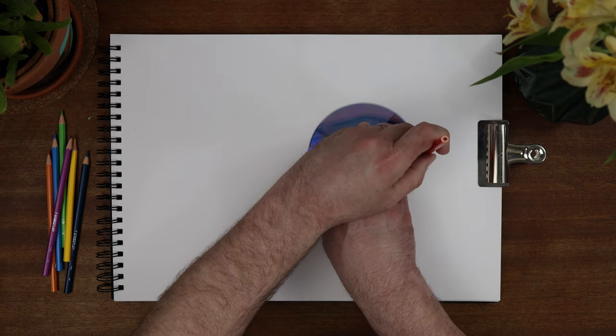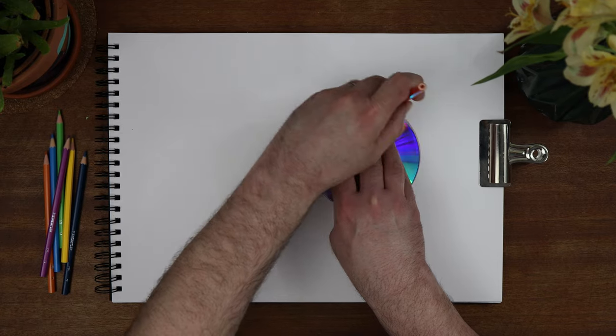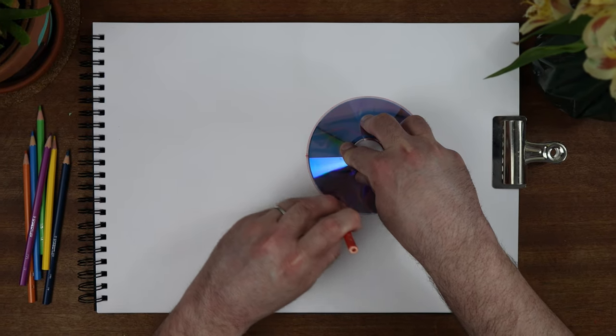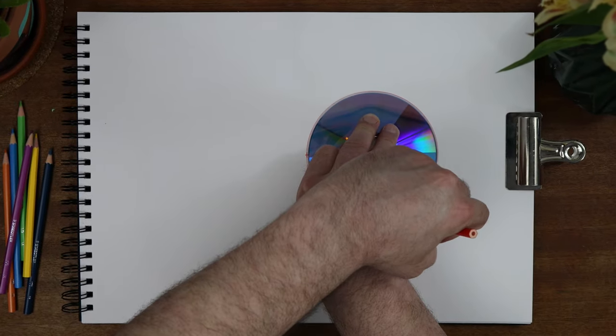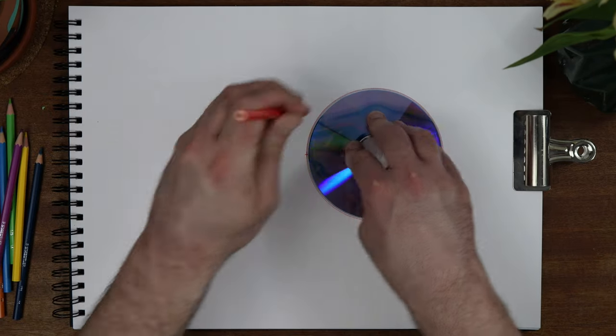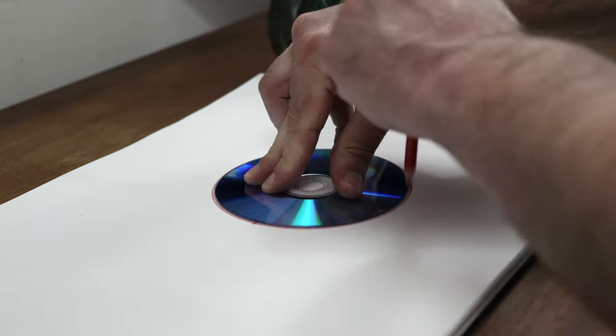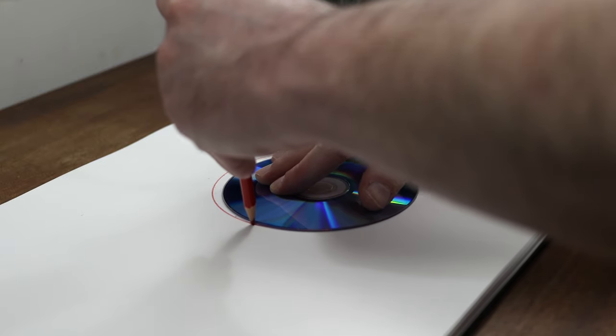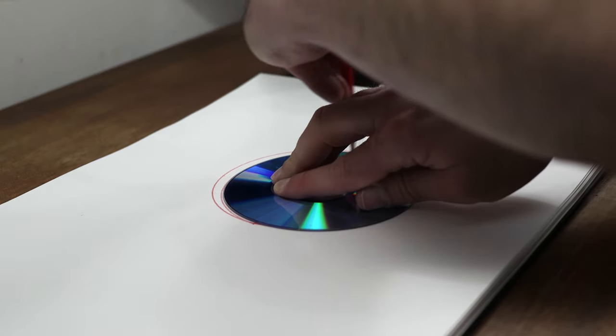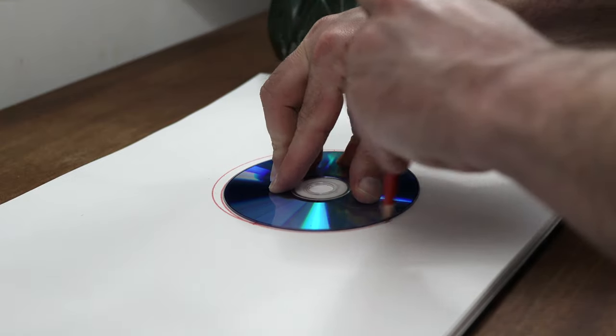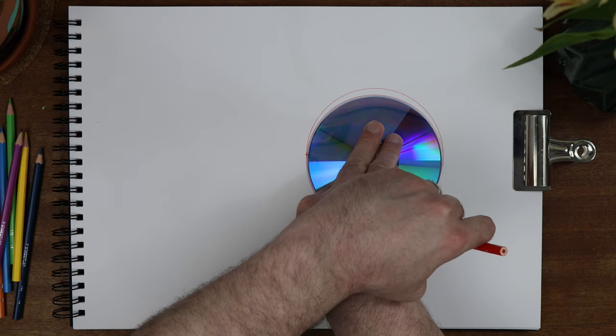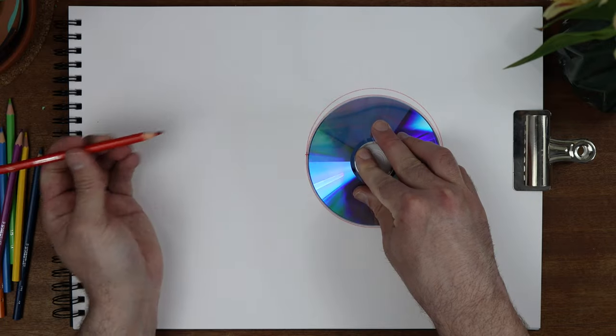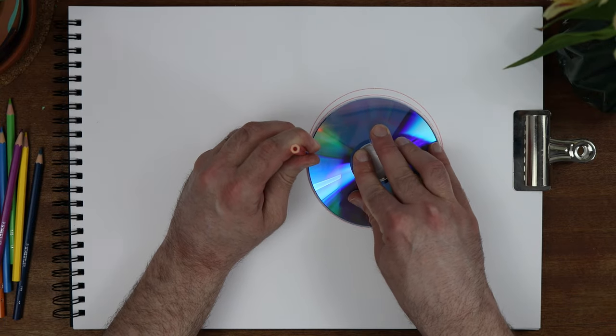Place your pencil onto the anchor point and push the CD against it. Draw around it until you reach the starting point. Then firmly keep your pencil on the anchor point and move your CD slightly making sure it is still touching your pencil. This will help keep the structure to the drawing. Keep doing this all the way around until you reach where you started.